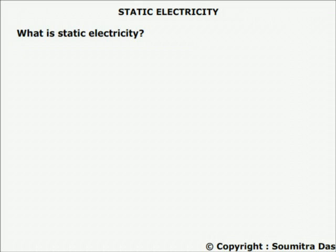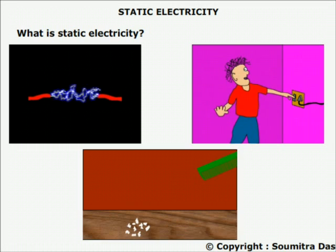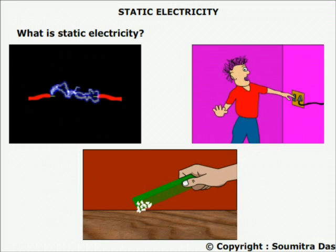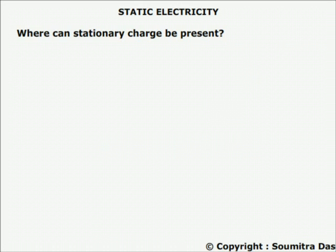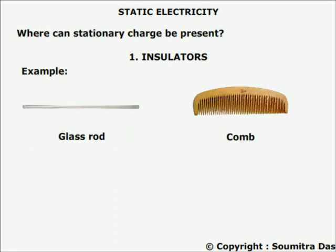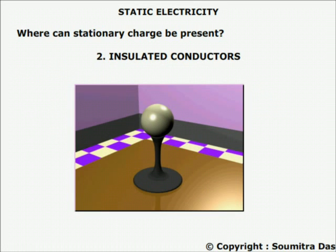What is static electricity? It is the stationary charge which causes spark, shock, or attracts very light particles. Stationary charge can be present in: 1. Insulators, and 2. Insulated conductors which are insulated from the earth.